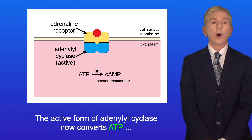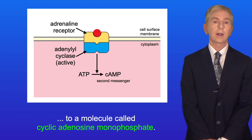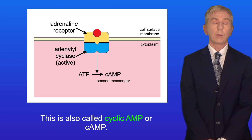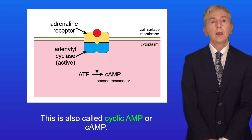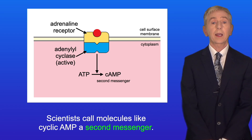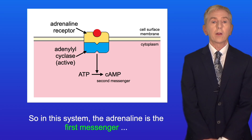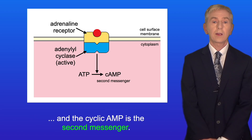The active form of adenylyl cyclase now converts ATP to a molecule called cyclic adenosine monophosphate, also called cyclic AMP or cAMP. Scientists call molecules like cyclic AMP a second messenger. So in this system, the adrenaline is the first messenger and the cyclic AMP is the second messenger.